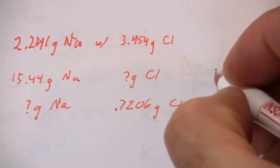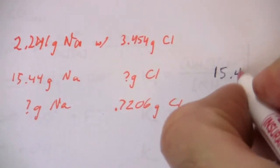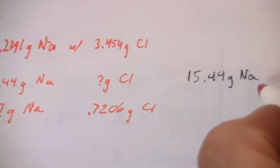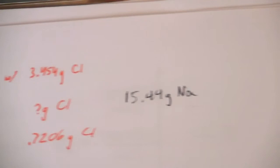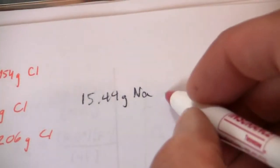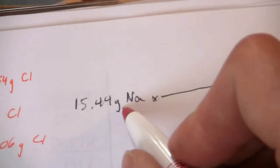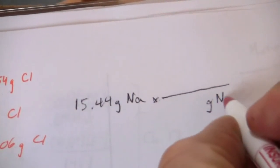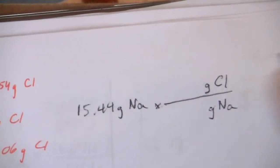We have, we'll start with our 15.44 grams of sodium. First of all, this is on the top, and so we need grams of sodium on the bottom.